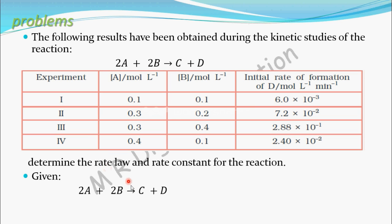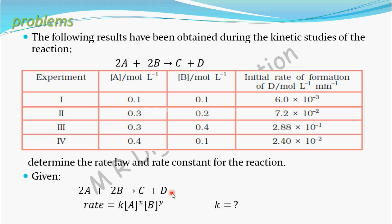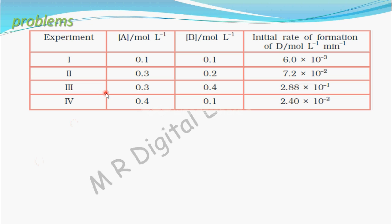Given this reaction, we need to find the rate law and rate constant. The rate law is written as: rate equal to rate constant K into concentration of A to the power X into concentration of B to the power Y. Here, X is the order with respect to A and Y is the order with respect to B. To find the rate law, we need to find X, Y, and K.